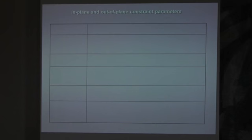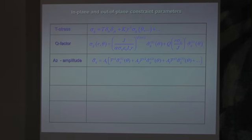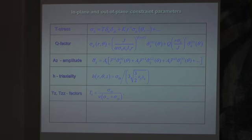One of the purposes of our study is analysis of constraint parameters behavior. As you know, in literature there are a lot of constraint parameters: that is the T-stress, that is the Q-factor, that is the second order amplitude factor. All three parameters T, Q and A2 are in-plane constraint factors. The stress triaxiality parameter Z-factor and AP area are out-of-plane constraint.